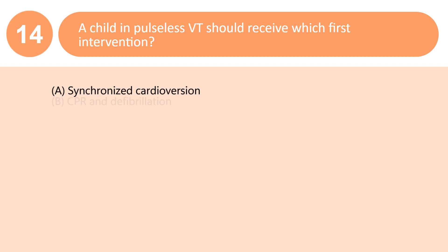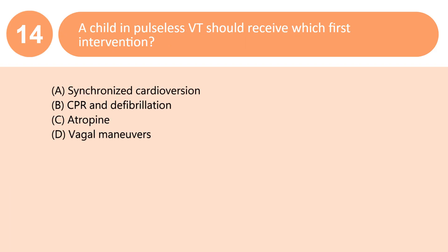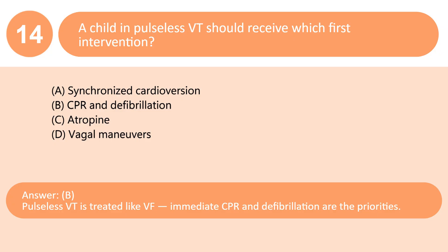A child in pulseless VT should receive which first intervention? A. Synchronized cardioversion. B. CPR and defibrillation. C. Atropine. D. Vagal maneuvers. Answer: B. Pulseless VT is treated like VF — immediate CPR and defibrillation are the priorities.